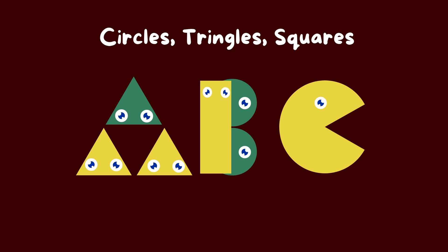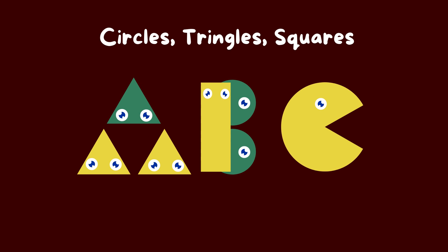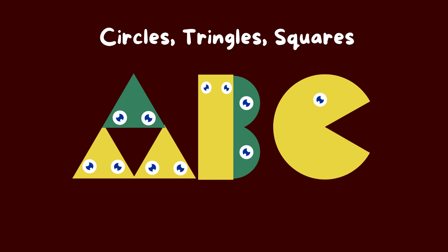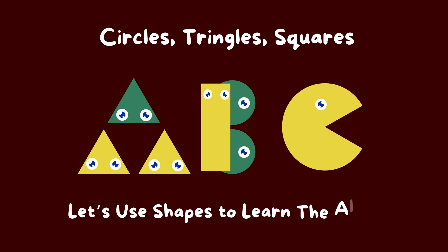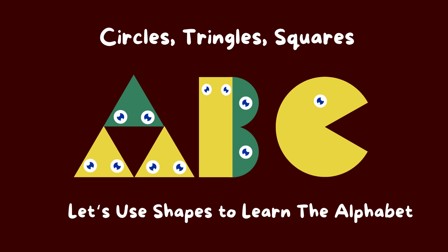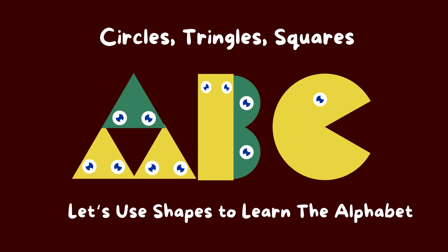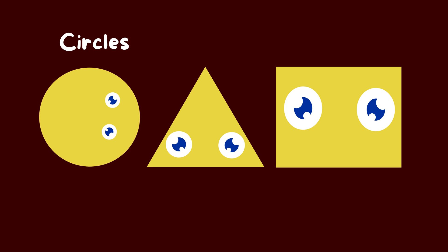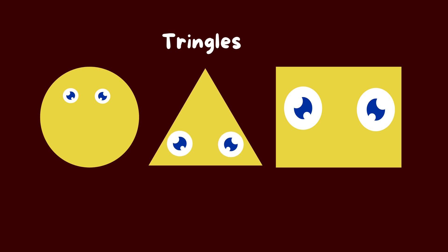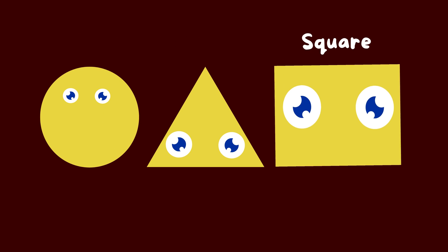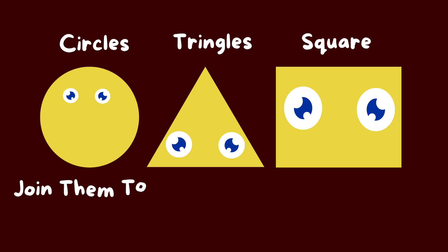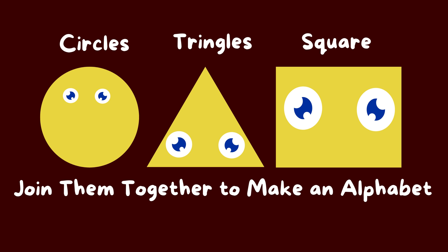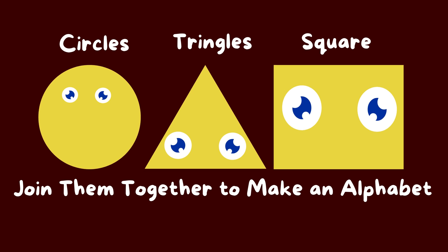Circles, Triangles, Squares. Let's use shapes to learn the alphabet. Circles, Triangles, Squares — join them together to make an alphabet.